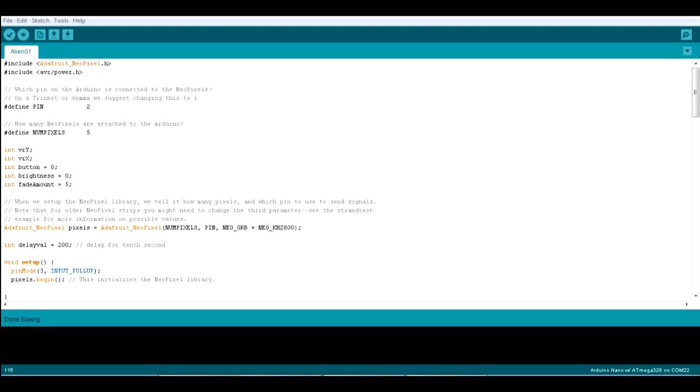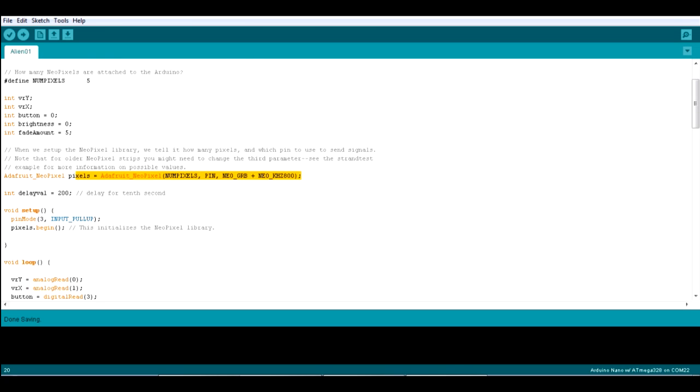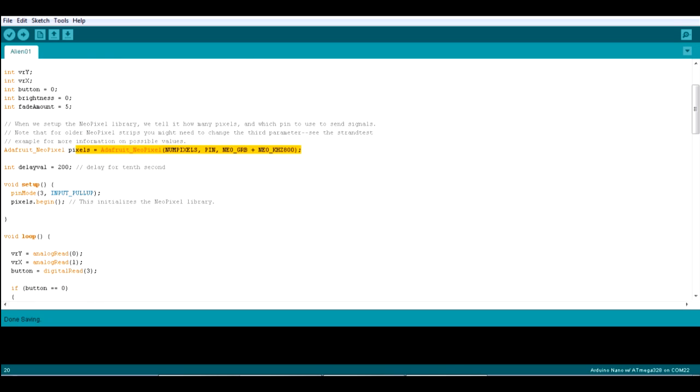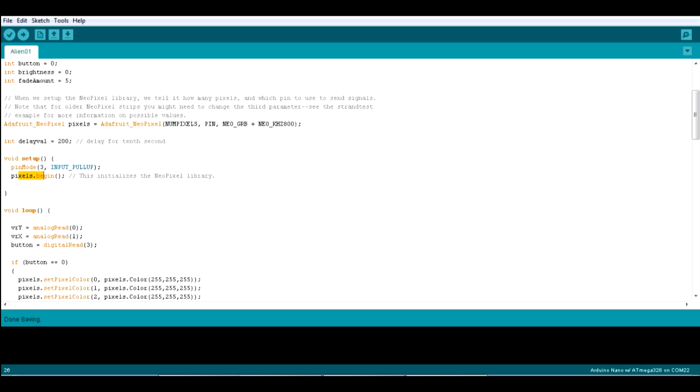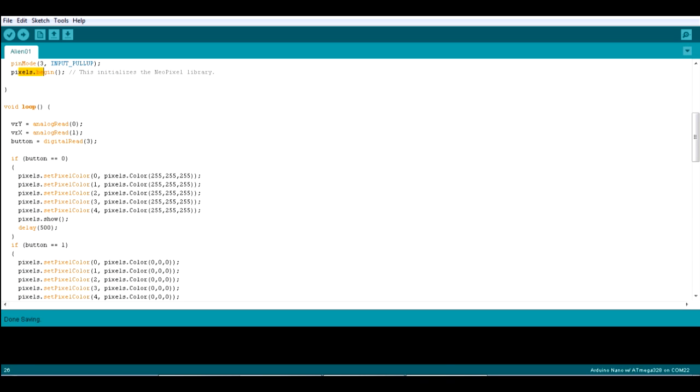I've written a very simple demo sketch in Arduino to just read those joystick and switch values and do some different things so we check it's working. Basically I've taken a combination of the Adafruit NeoPixel basic example with all the setup here for the NeoPixel library, initializing the NeoPixels and so on. And I've also read in the digital pin here, which is input pull up, which means that basically when you push it, it goes to ground and we don't need any pull up or pull down physical resistors. So we've got the pixels begin there to initialize the NeoPixel library. And what I've done is basically read in the X and Y potentiometers on that joystick and the button into variables called VRX, VRY and button, which is a digital button.